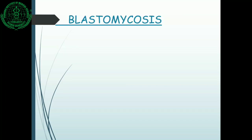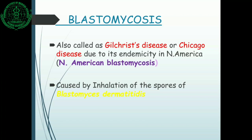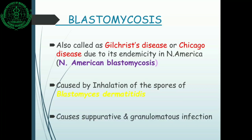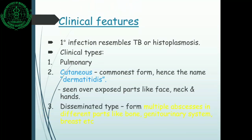The second causative agent in systemic mycoses is Blastomyces dermatitidis, and the disease is called blastomycosis. It is also named Gilchrist's disease or Chicago disease due to its endemicity in North America, and is also known as North American blastomycosis. It is caused by inhalation of spores of Blastomyces dermatitidis. As the name suggests, it causes skin symptoms and produces suppurative and granulomatous infection.